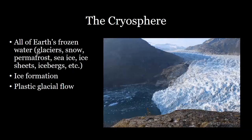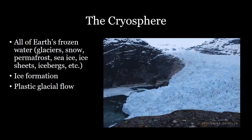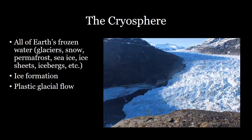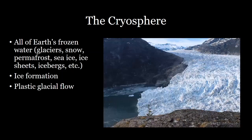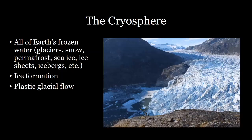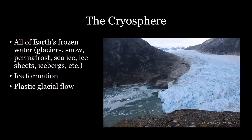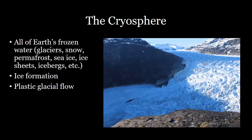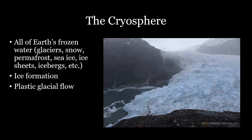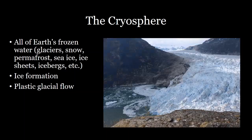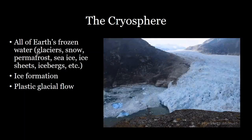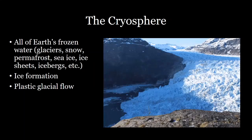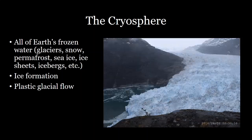Glaciers move. Some glaciers move extremely fast — on the order of tens of meters per day — because glacial ice is a viscous fluid. It flows just like honey does, but on a much slower scale. We call that plastic flow because it moves and deforms plastically as it moves down a slope.